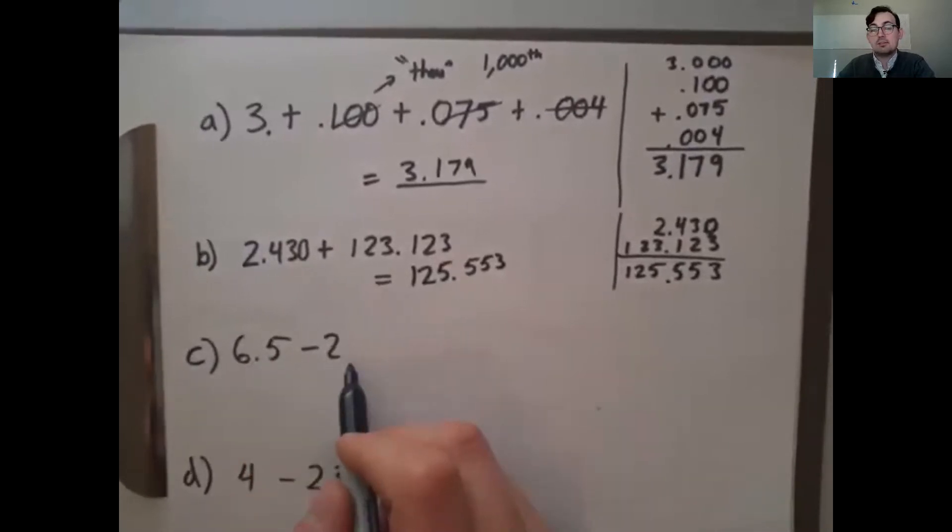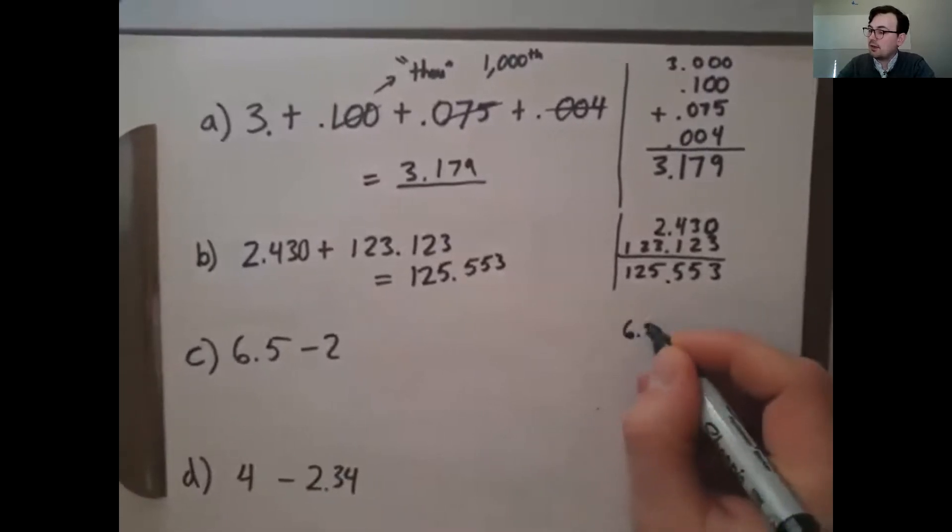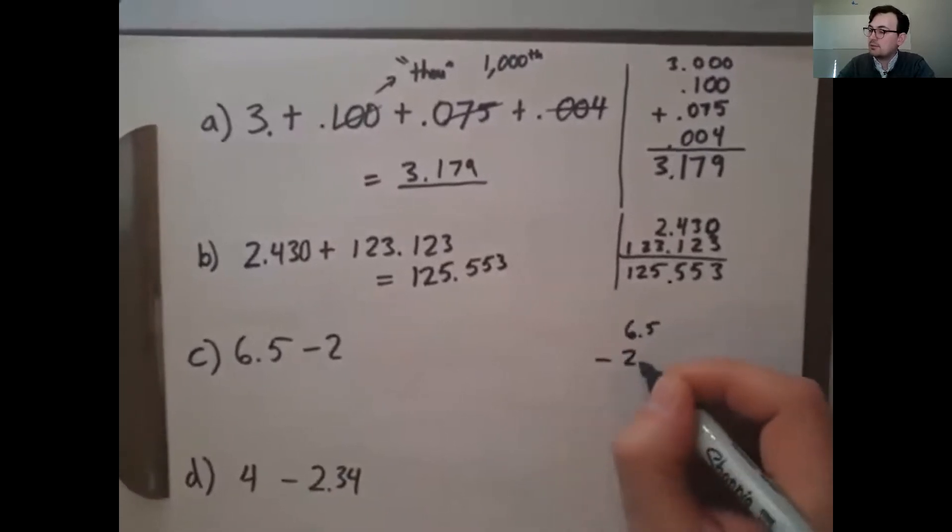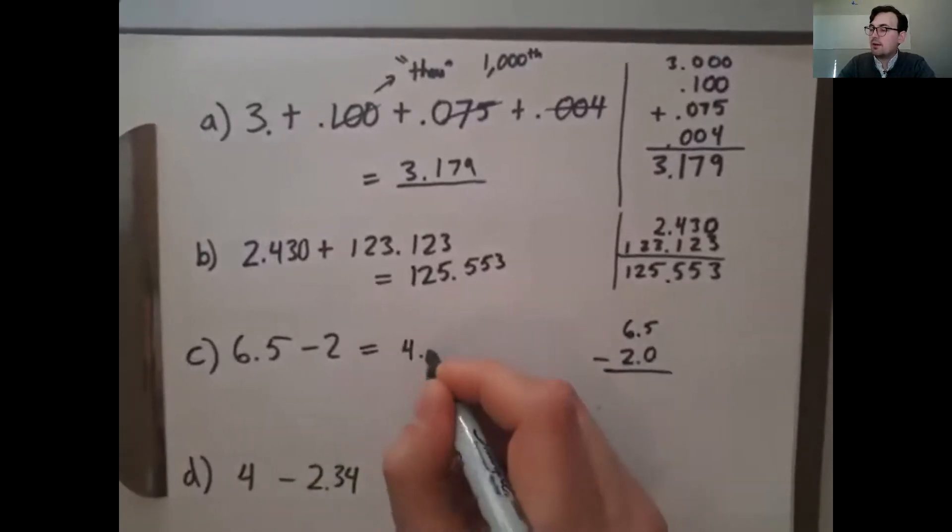I've got 6.5 minus 2 for C. So I would do 6.5 minus 2. And it's got to be 2.0. This would be 4.5.